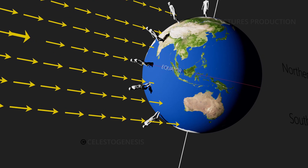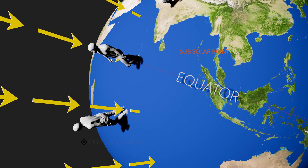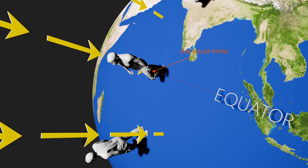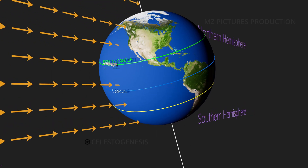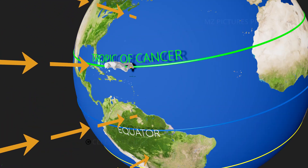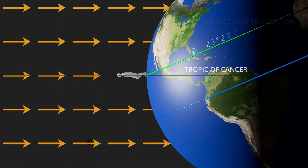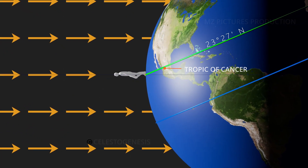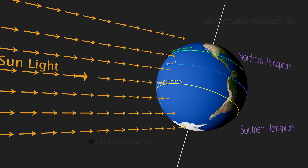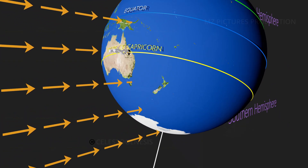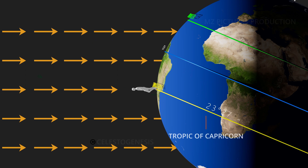The subsolar point on a planet is where the Sun appears directly overhead. The Tropic of Cancer, also known as the Northern Tropic, is the most northerly circle of latitude on Earth at which the Sun can be directly overhead — approximately 23 degrees 27 minutes north of Earth's equator. The Tropic of Capricorn is the southernmost circle of latitude on Earth at which the Sun can be directly overhead — approximately 23 degrees 27 minutes south of Earth's equator.